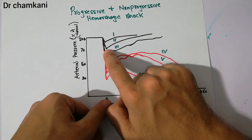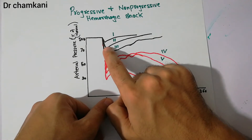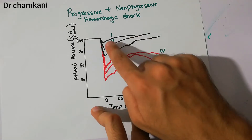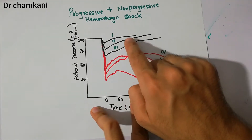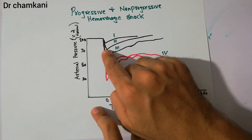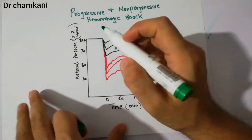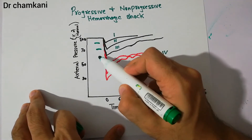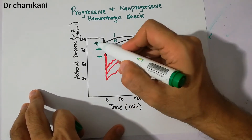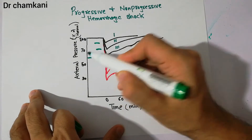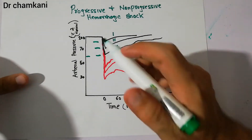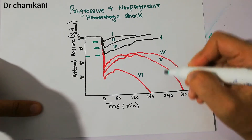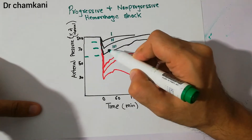In both the first and second groups, bleeding was stopped and the animals eventually recovered. The first group recovered very quickly, while the second group took a bit longer — around 60 to 120 minutes — because the initial drop in arterial pressure was greater. The third group was bled to an even lower arterial pressure level, but after bleeding was stopped, they also recovered by around 240 minutes.